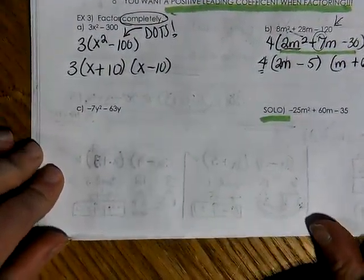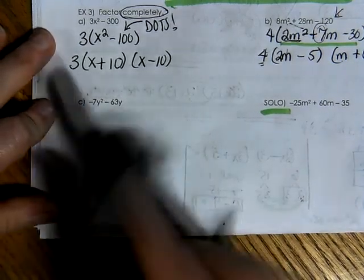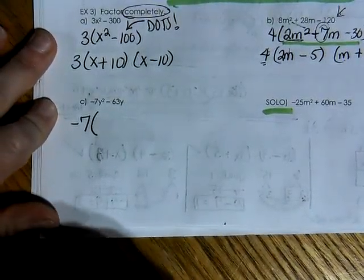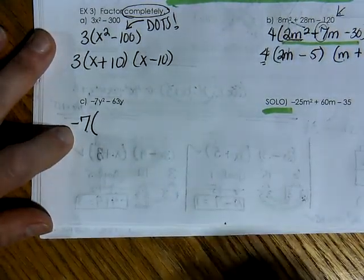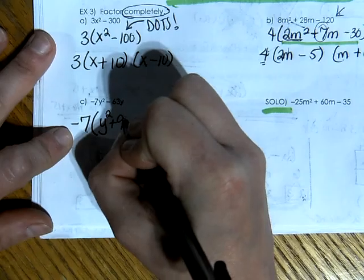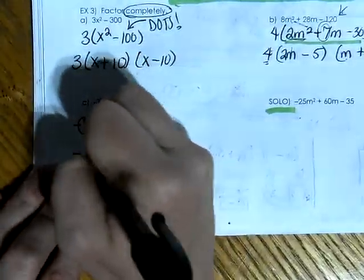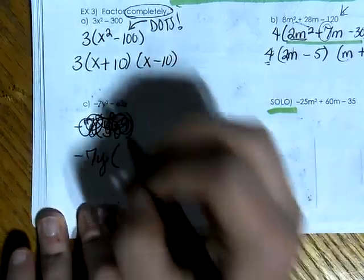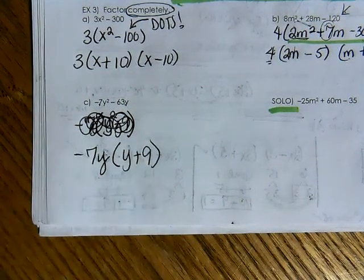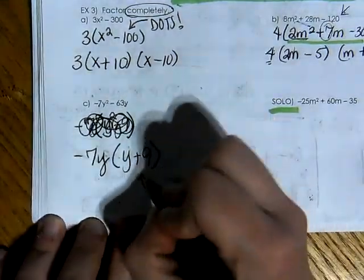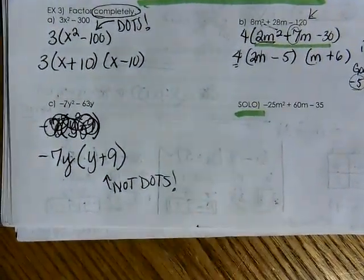Letter C has a negative leading coefficient. Factor out a negative GCF — 7 and 63 share a 7, and they also share a y, so factor out negative 7y. This changes the signs inside, leaving y plus 9. Be careful: even though you see a 9, this is not DOTS or a PST — it is not a difference of two perfect squares. So this is fully factored as negative 7y times (y plus 9).